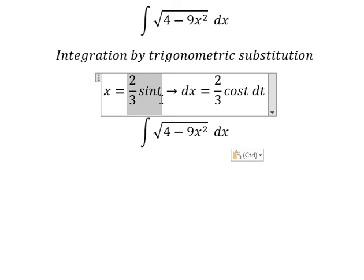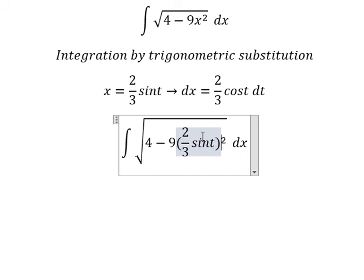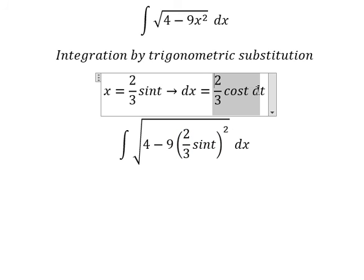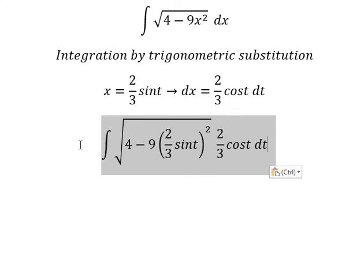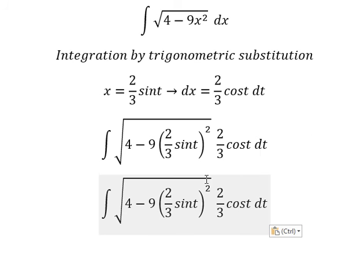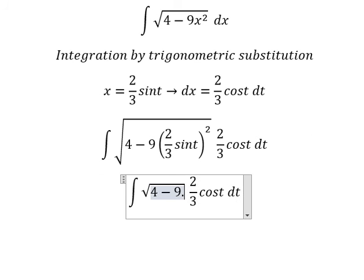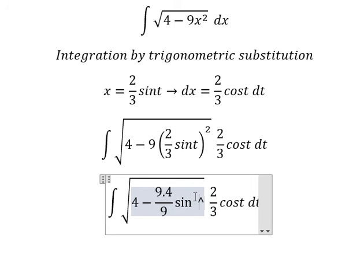So we put this one in here. The x we change for this one, and this one we change for 4 over 9 sine t squared.